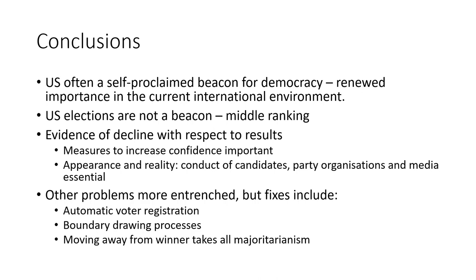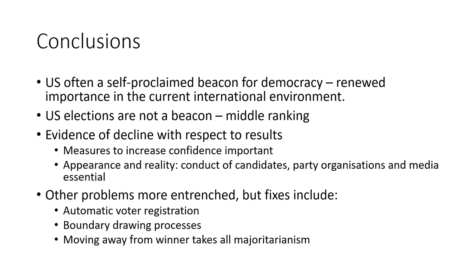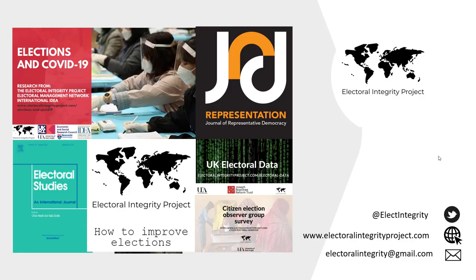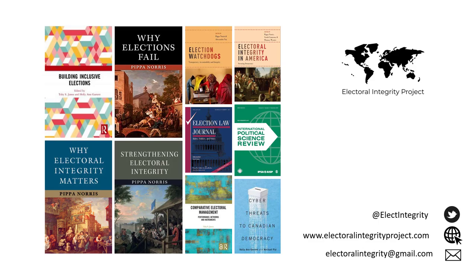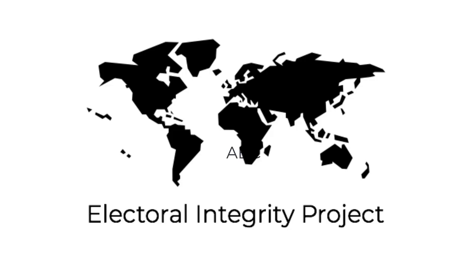There are other problems in US elections, including voter registration, electoral boundaries, and so on. But these are not easy fixes — they are long and deep-rooted problems in American elections that have been there for a very long period of time. Automatic voter registration is something we have both published on recently; you can see our piece in the Washington Post about why that is important. Ultimately, some of these reforms are going to take a lot of time. Do look on our website for many of the resources and books from which this presentation draws, and especially our Global Electoral Integrity Report. Thanks for listening.